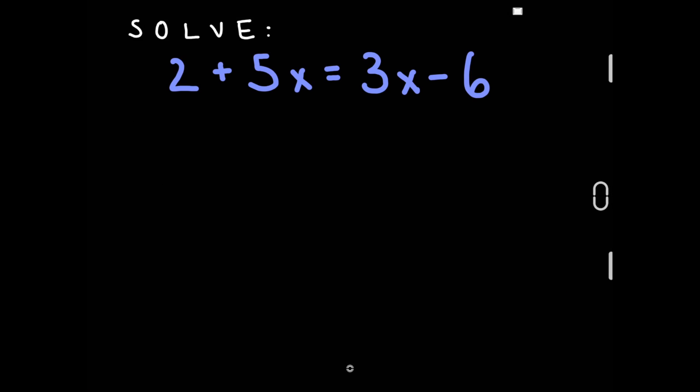In this problem, our first step will be to get only one side to have a variable, which means we have to subtract 3x from both sides. 5x minus 3x equals 2x.